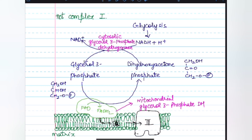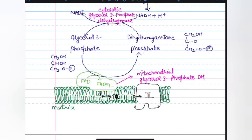The mitochondria of plants have an externally oriented NADH dehydrogenase that can transfer electrons directly from cytosolic NADH into the respiratory chain at the level of ubiquinone. Because this pathway bypasses the NADH dehydrogenase of complex 1 and the associated proton movement, the yield of ATP from cytosolic NADH is less than that of NADH generated in the matrix.